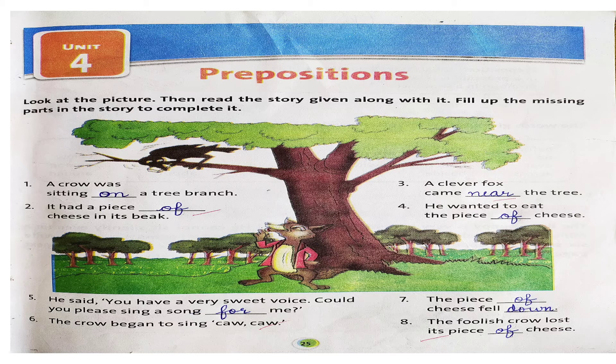A crow was sitting — dash — a tree branch. Kahan betha hai wo? It is sitting on, uske ooper, so it is sitting on a tree branch. It had a piece — dash — cheese. Kis cheese ka piece hai uske paas? Piece of cheese, right? Then number 3: A clever fox came — dash — the tree, near the tree. He wanted to eat the piece — dash — cheese, of cheese.